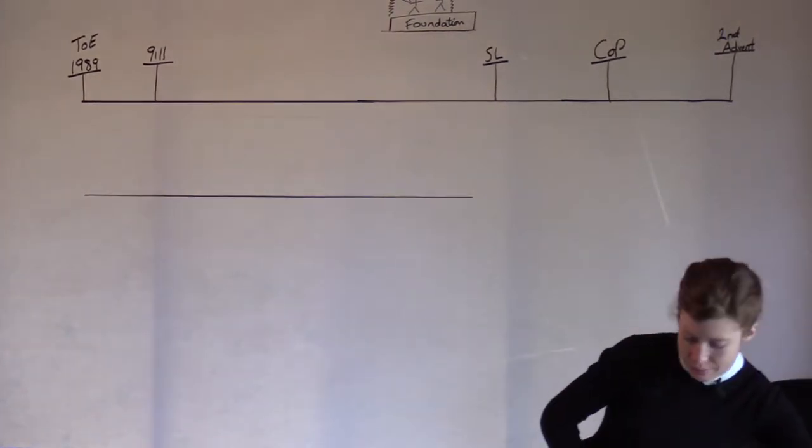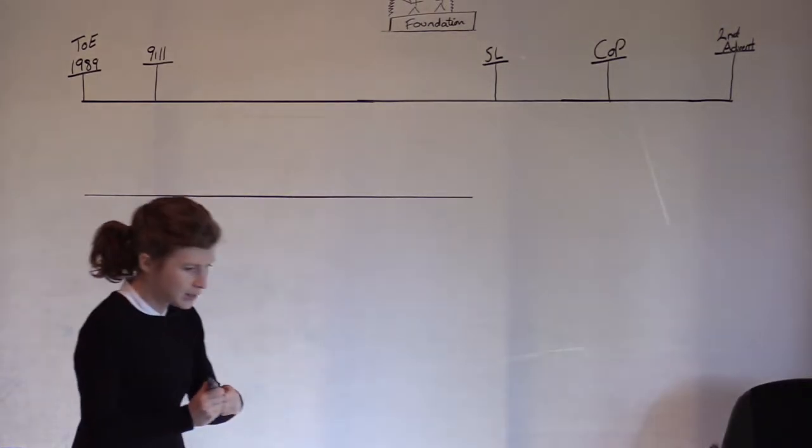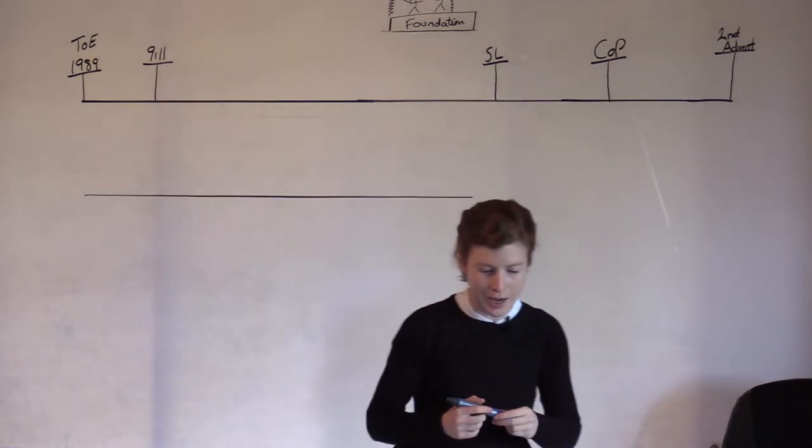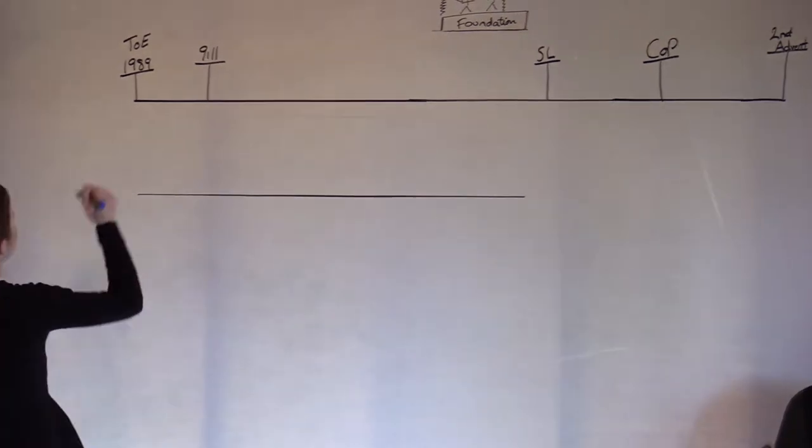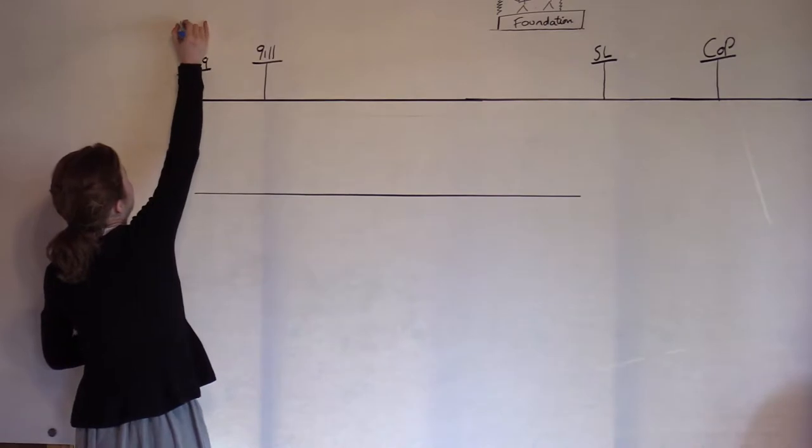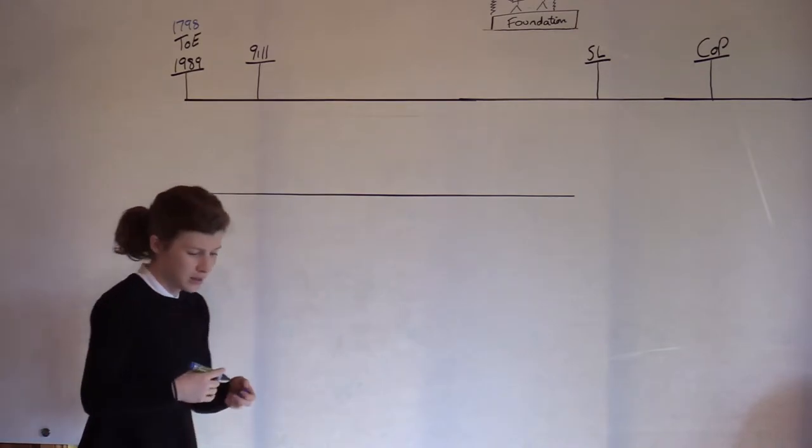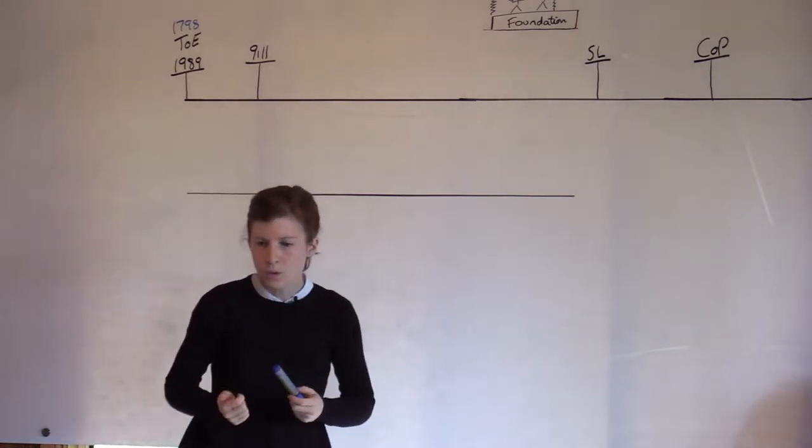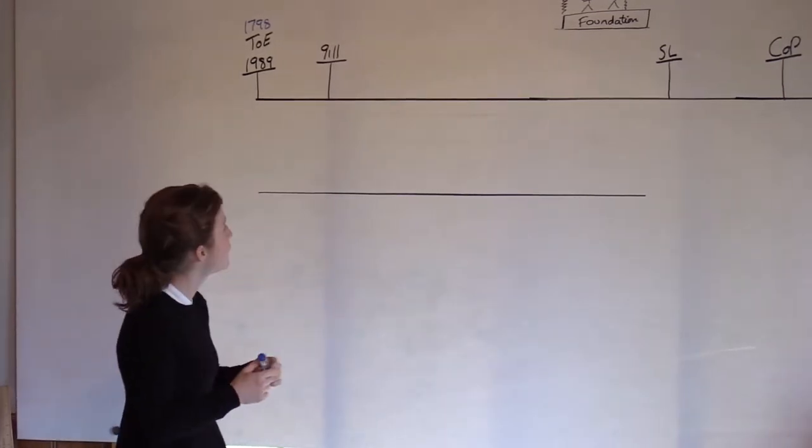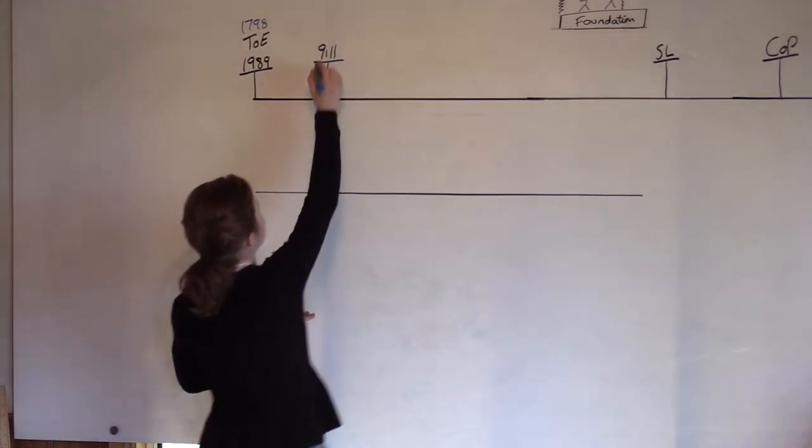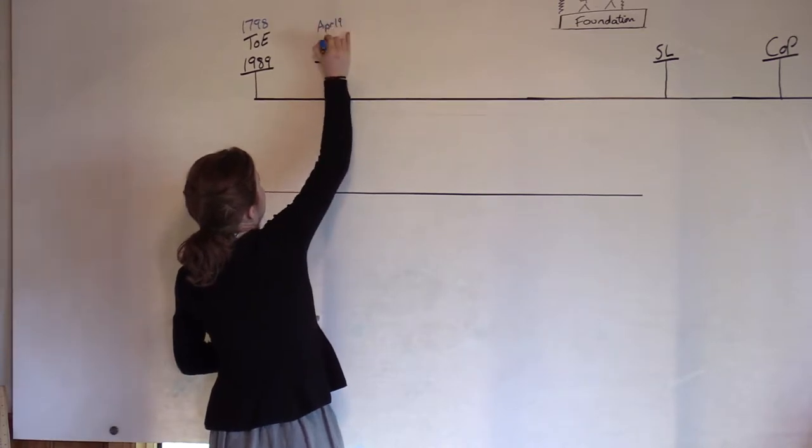We can overlay on top of this Millerite history, which we know is also a template for our time. So 1989 is what in Millerite history? 1798, also the time of the end from Daniel 11 verse 40. 9-11, what is 9-11? August 11, 1840. What I want to note, because we're developing a particular theme, I want to note April 19. April 19, 1844.